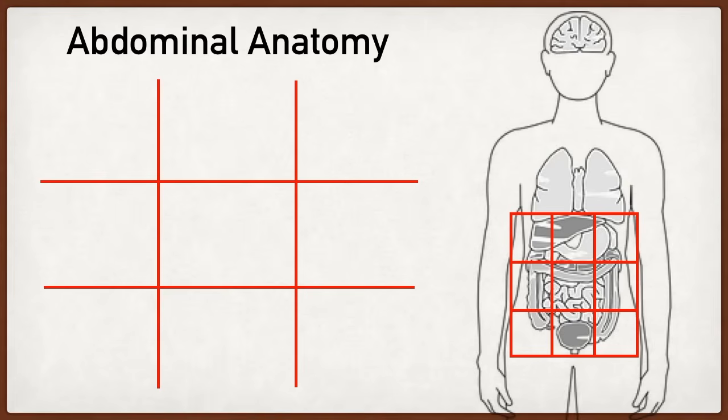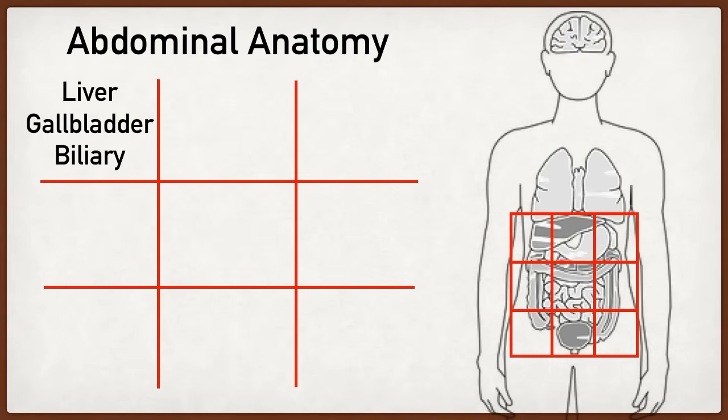Now that we have a good understanding of the names of the different abdominal quadrants, let's talk about the anatomy that sits under each quadrant. We have a more comprehensive image that includes parts of the pancreas, spleen, and bladder as well. Starting with the right upper quadrant or right hypochondriac region, you can see on the image that the liver, the gallbladder, and the biliary system are located in this quadrant.